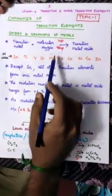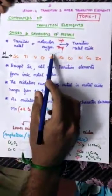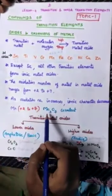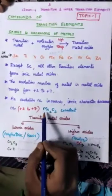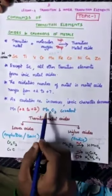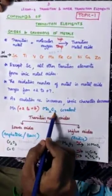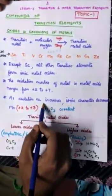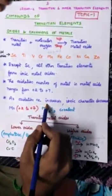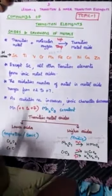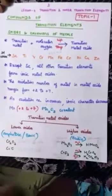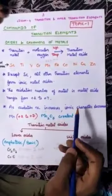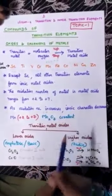For example, Manganese has plus 2 to plus 7 oxidation states. One of the compounds of Manganese is Mn2O7. Manganese heptoxide is covalent in nature because here Manganese is at plus 7 oxidation state. So as you look at the oxidation state, you can see that covalent character increases.